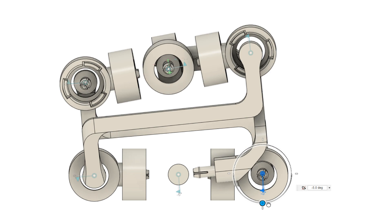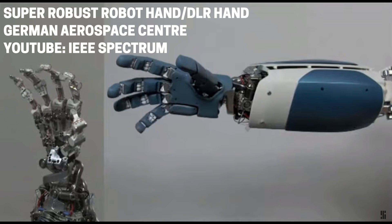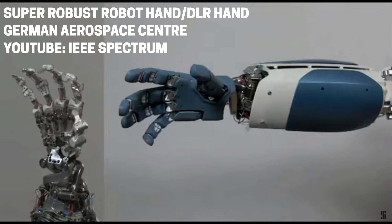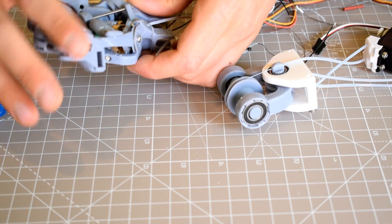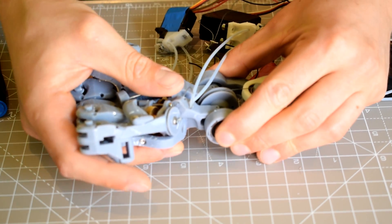The DLR hand is designed to be super robust, which does come at the cost of a reduced range of motion, and that's very apparent in the wrist. But what I really want to build is a hand that can move dexterously, quickly, and fluidly. I'm not totally abandoning that idea though.